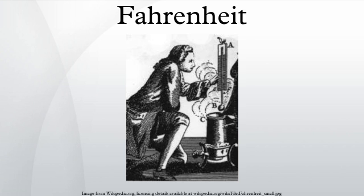Fahrenheit proposed his temperature scale in 1724, basing it on three reference points of temperature. In his initial scale, the zero point is determined by placing the thermometer in brine — he used a mixture of ice, water, and ammonium chloride, a salt, at a 1:1:1 ratio. This is a frigorific mixture which stabilizes its temperature automatically; that stable temperature was defined as 0 degrees Fahrenheit.